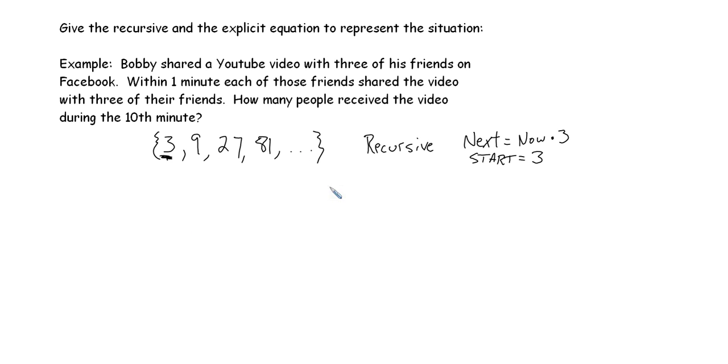So what about an explicit sequence here? You could look at it as this is the first element, second, third. And we need to find a formula now for each element in this sequence. One times three is three, but two times three is not nine. So it's not times three like we had here.